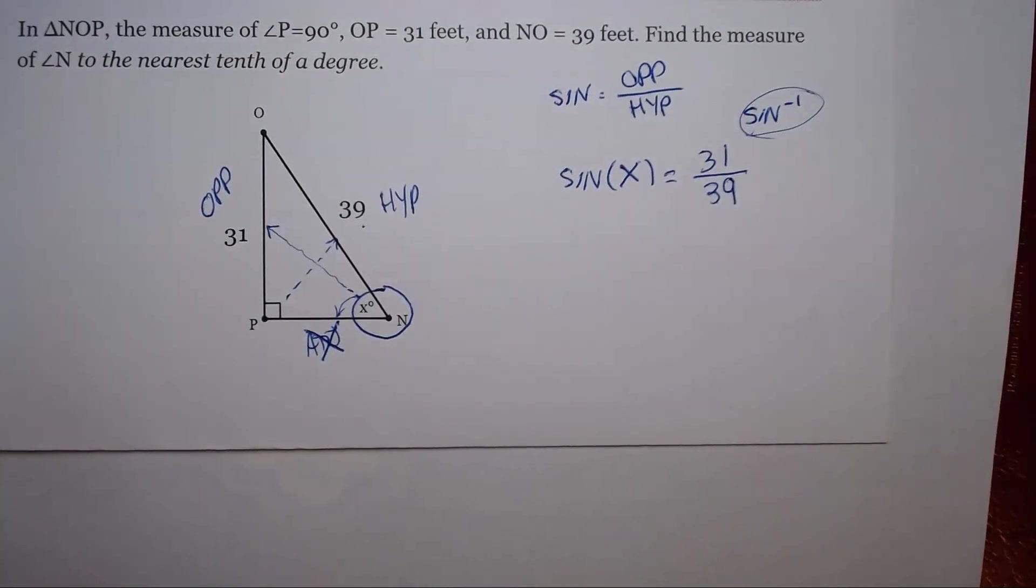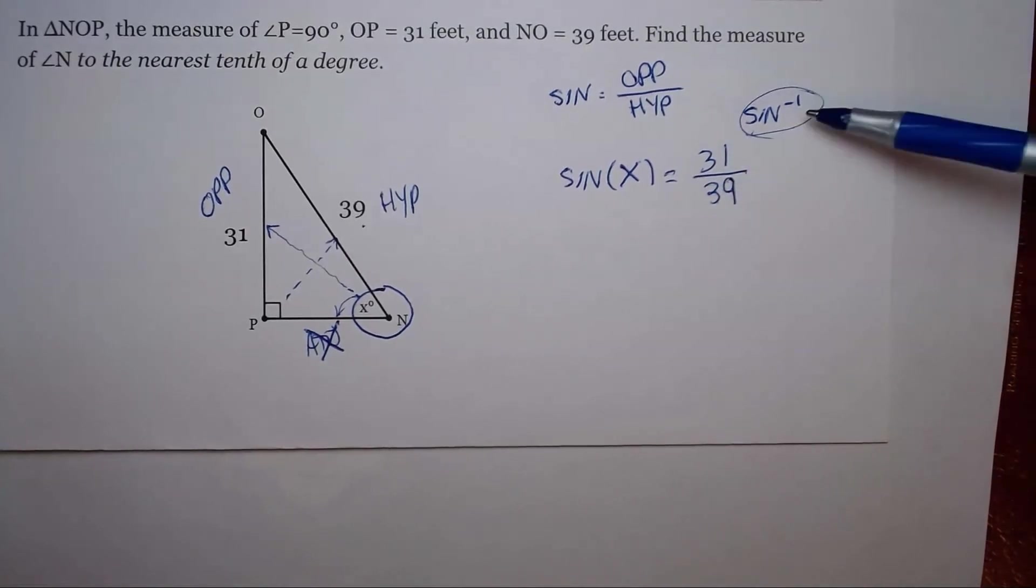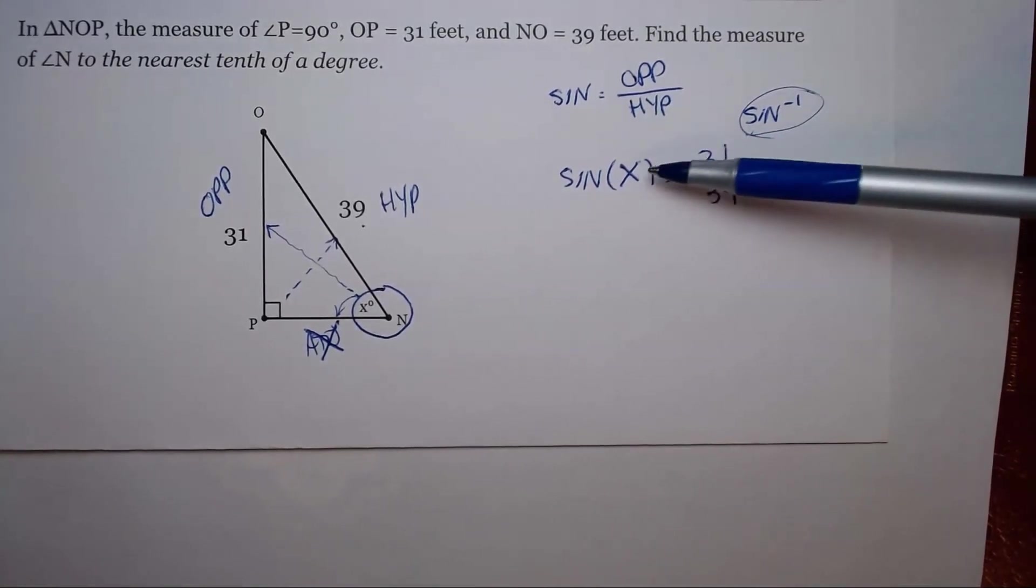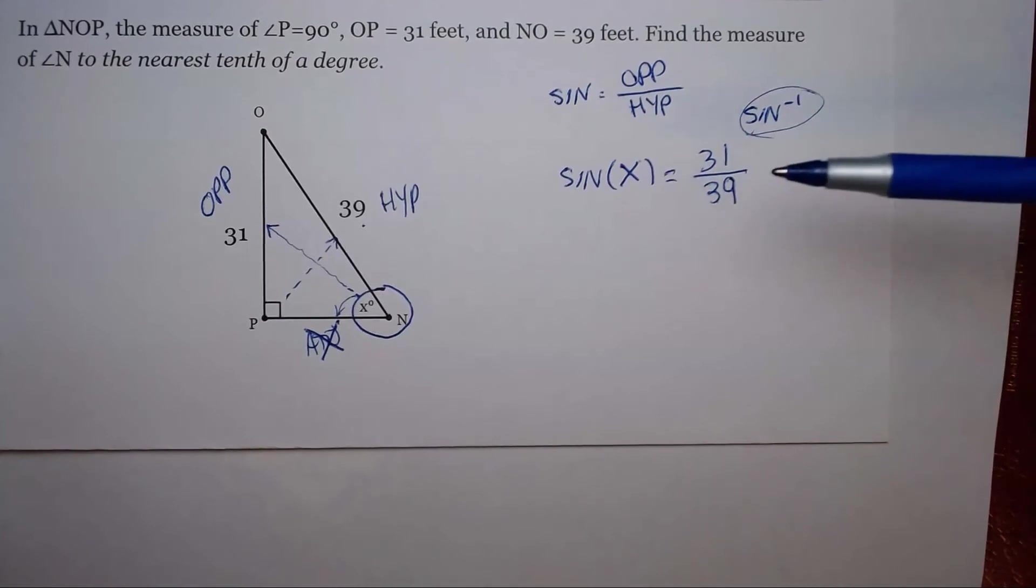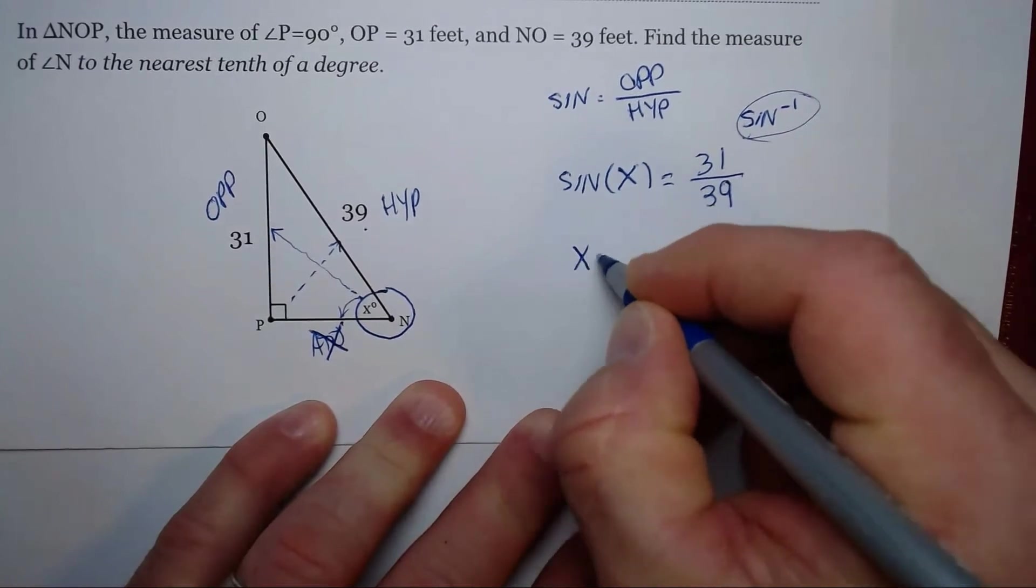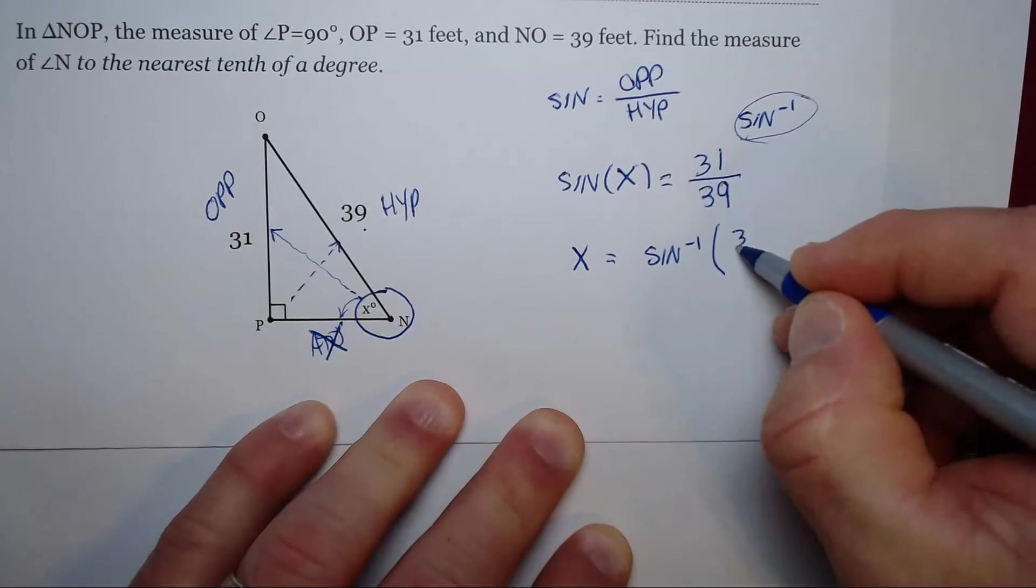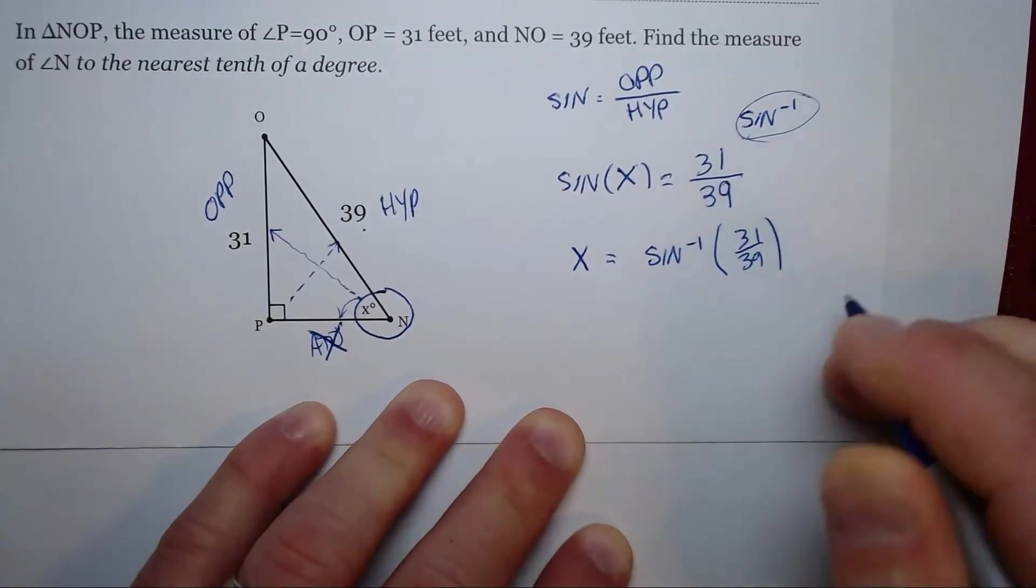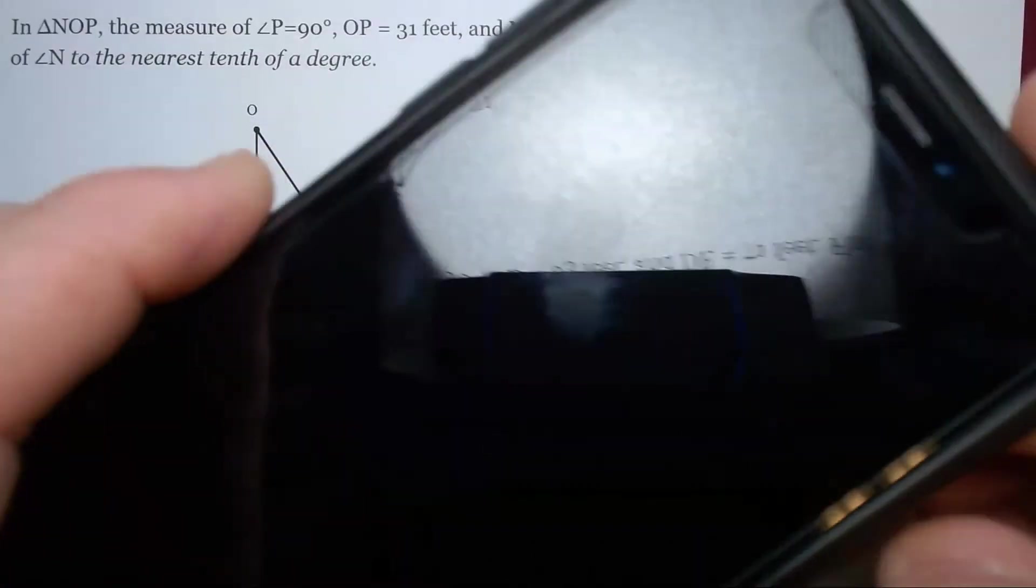What do we do? We can use inverse sine and put this ratio in, and the inverse sine will tell us there's only one angle that has a sine ratio of 31 over 39. So we would rewrite our equation like this: X equals the inverse sine of 31 over 39. Let's solve for X. That's going to be in degrees. I'm going to show you on an iPhone calculator how to do that.